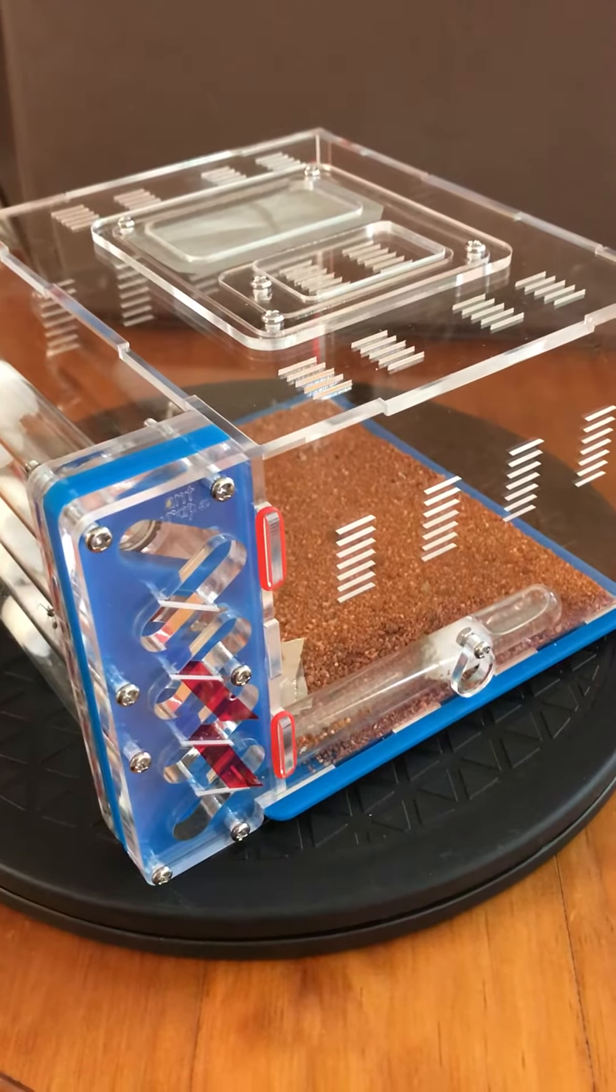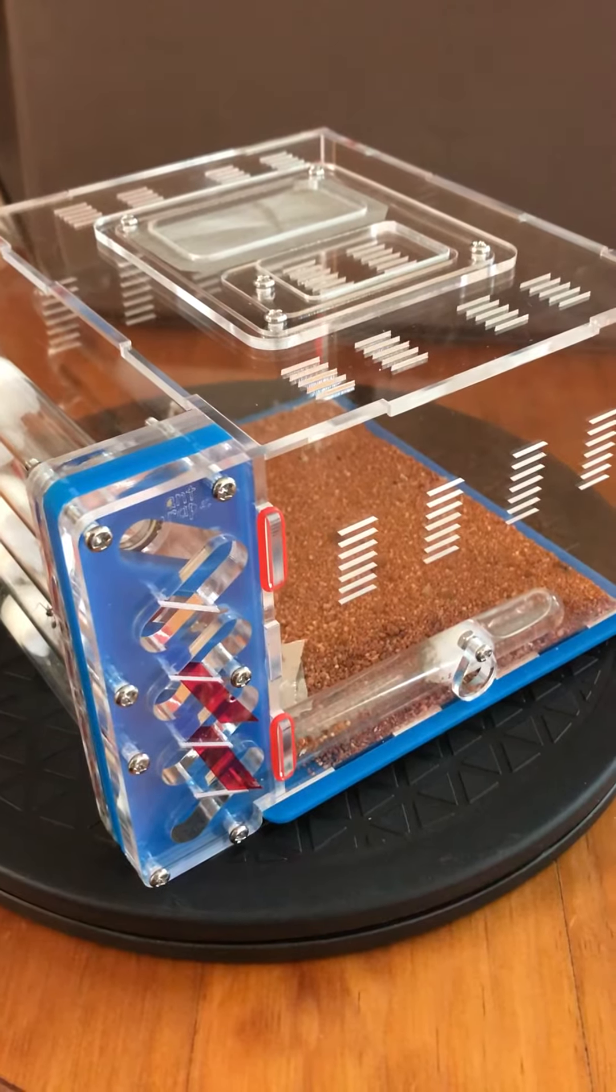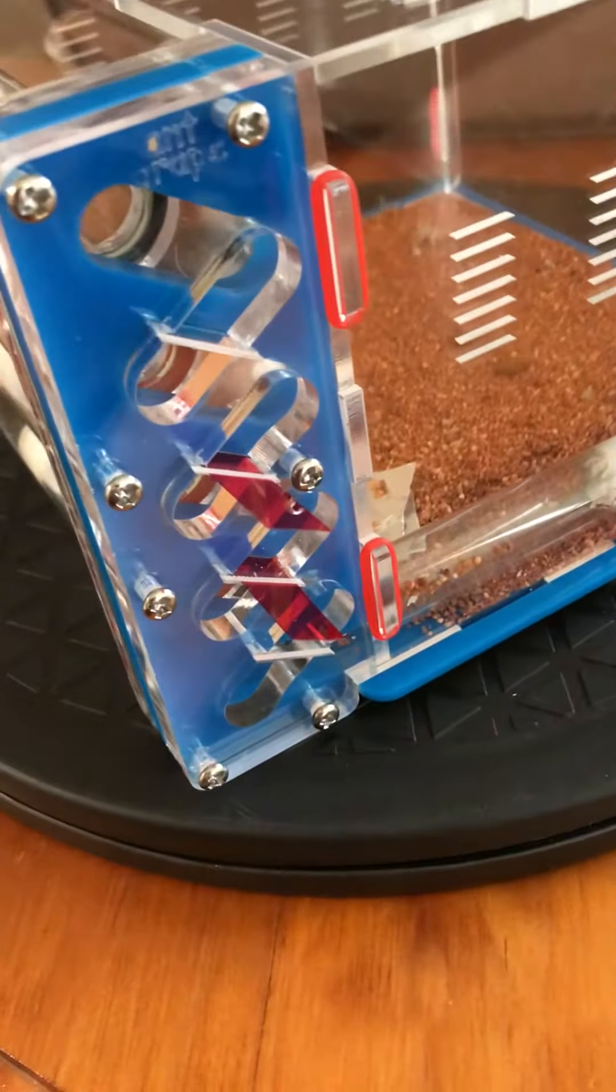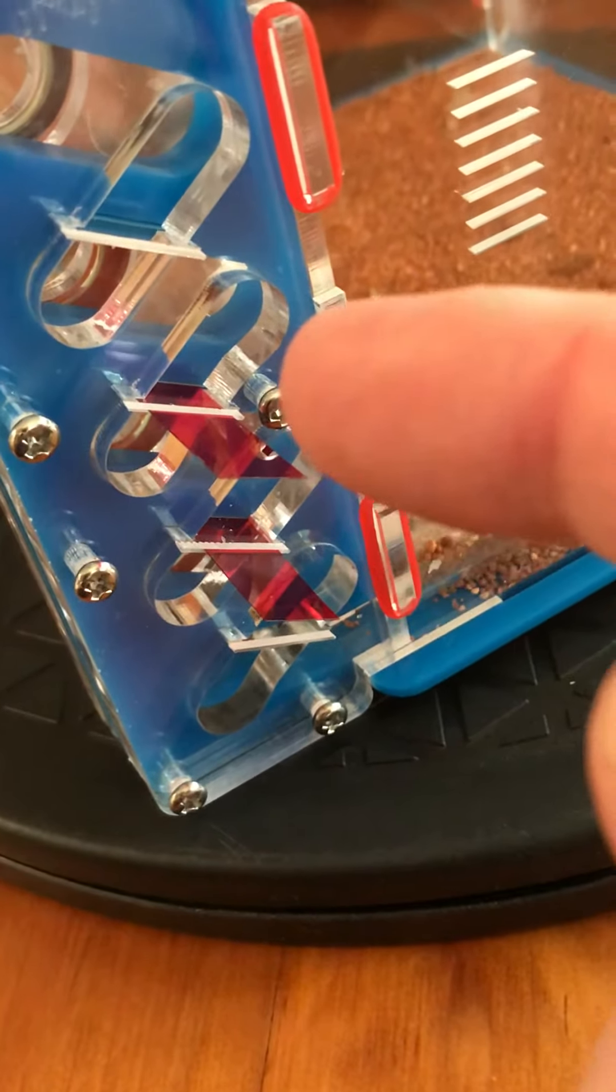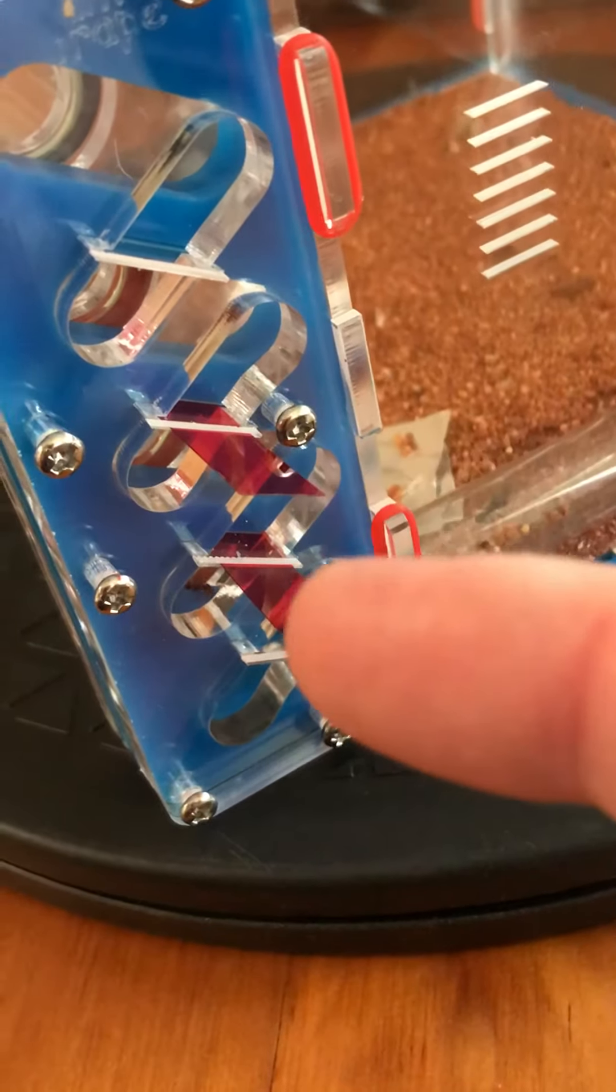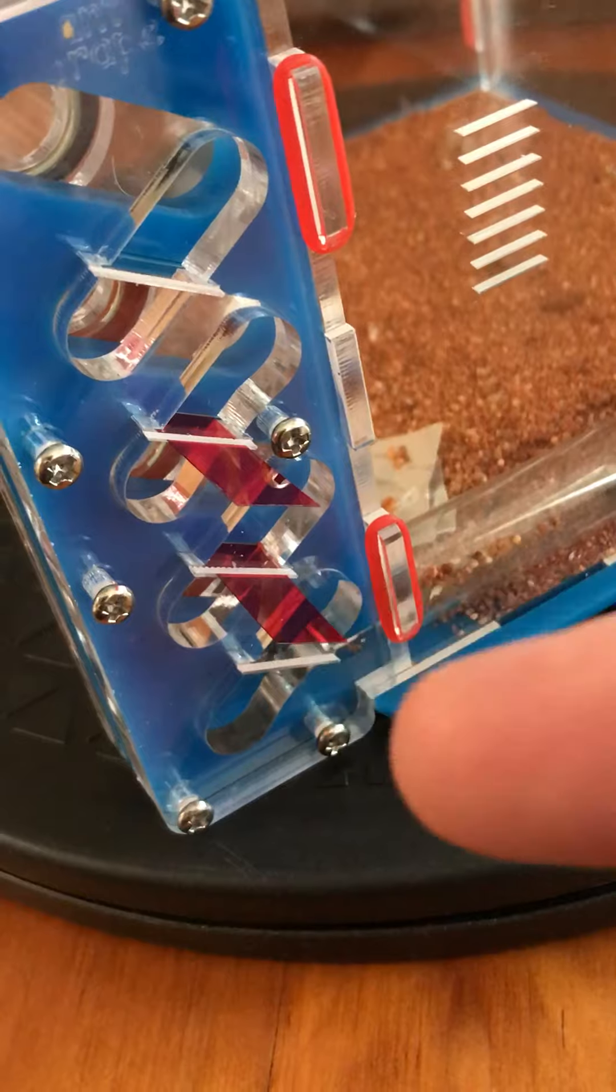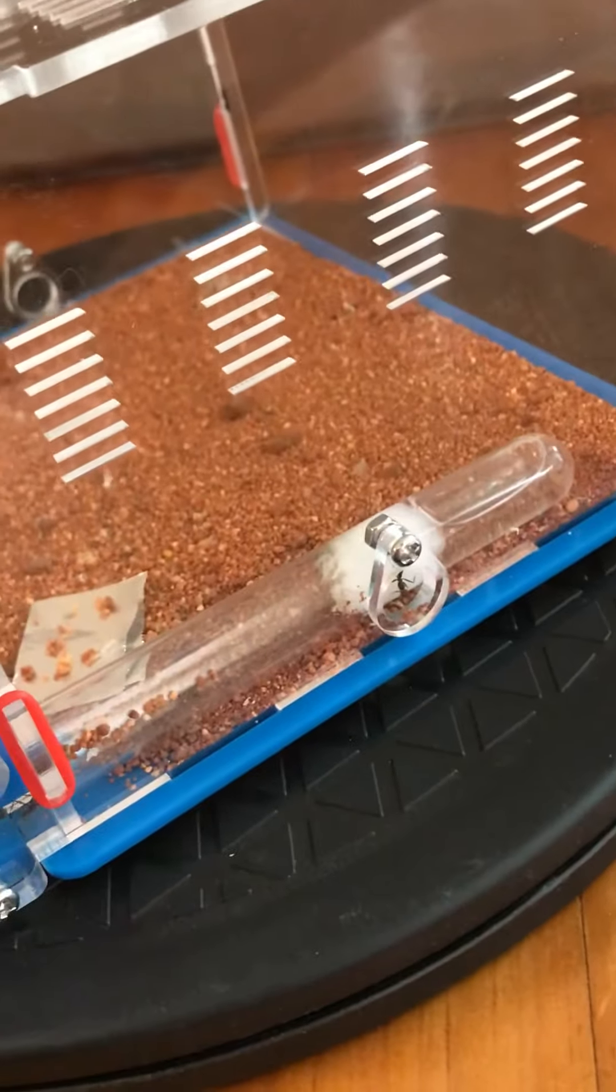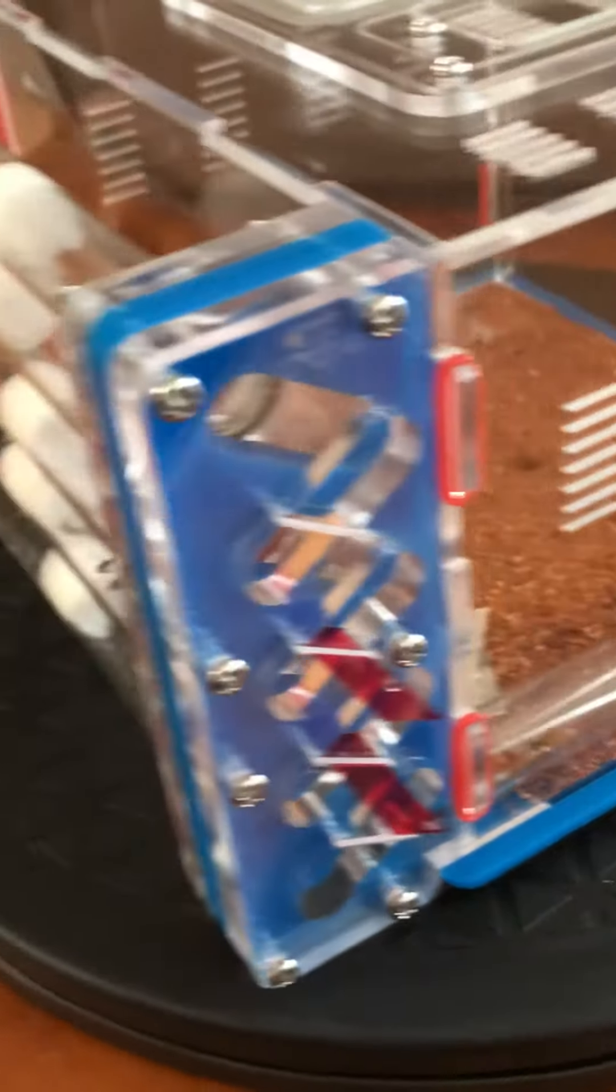On special this month we have our five test tube ant farm with outworld. This ant farm has special features where we can actually block off different test tubes simply by putting the little divider in, take it out and they can go and explore through the rest. Last night we put some meat ants in here and they've gone into the new test tube straight away.